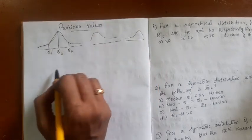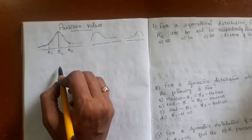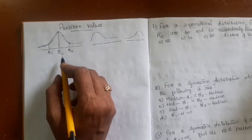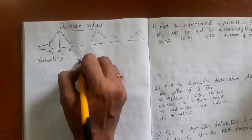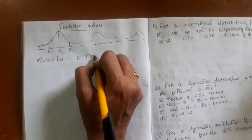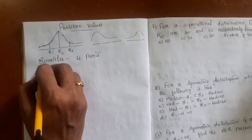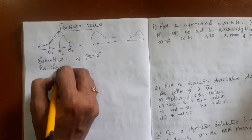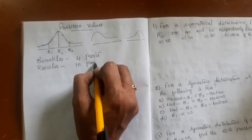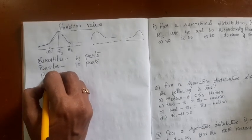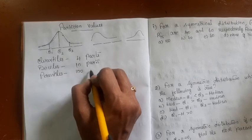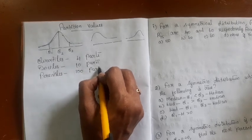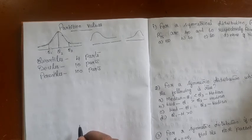This is called a symmetric distribution — a bell-shaped curve. The values which divide the distribution into four equal parts are called quartiles. Quartiles divide the distribution into four equal parts, deciles divide it into ten equal parts, and percentiles divide it into one hundred equal parts. These are the three partition values we frequently use in statistical analysis.